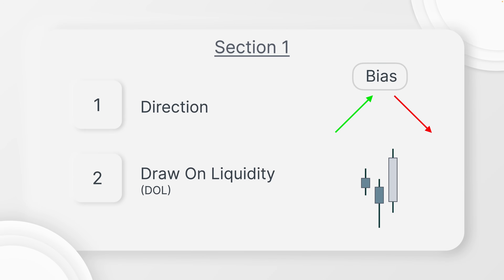With bias, we never want to guess. We want to understand what the highest probability move is for the market to do next. Defining bias starts with direction: are we going higher (bullish) or lower (bearish)? Once you find the direction, you need to find the draw on liquidity — your target — what price is actually targeting when going higher or lower.